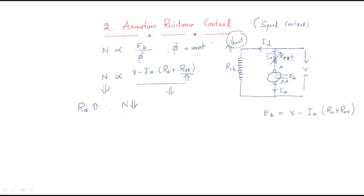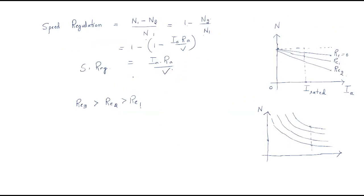In the last session we discussed about the armature resistance control. When the external armature resistance is varied, speed can be varied automatically. When the armature current increases, if you draw the relation between speed and armature current by different external armature resistances, there is no external resistance and speed will be like this — this is especially for the DC shunt motor.